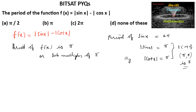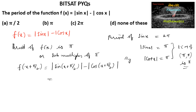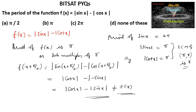Let us check the sub-multiple π/2. f(x + π/2) = |sin(x + π/2)| - |cos(x + π/2)| = |cos x| - |-sin x| = |cos x| - |sin x|, which is not equal to f(x). Hence π/2 is not a period, and we conclude the period of f(x) is π, option B.